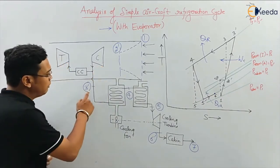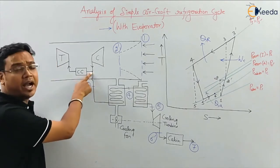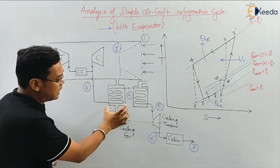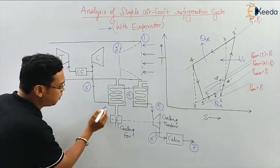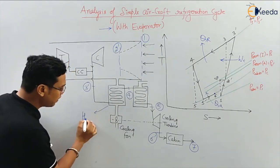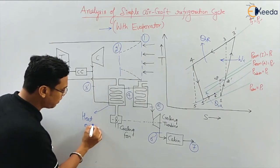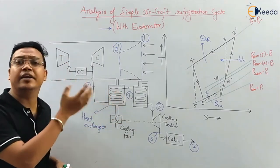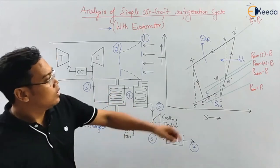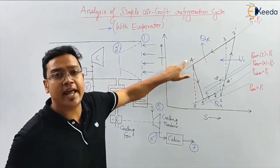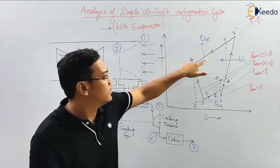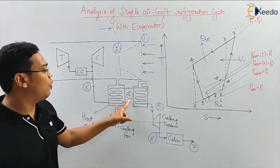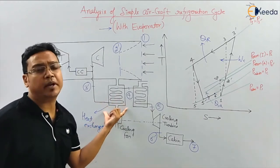Air will go from three dash to the heat exchanger. In the heat exchanger, the air will reject heat. Process three dash to four is an actual constant pressure heat rejection process. This process happens in the heat exchanger.